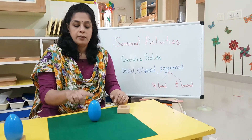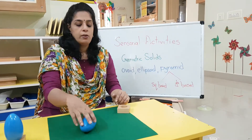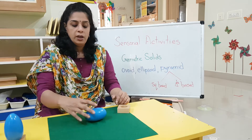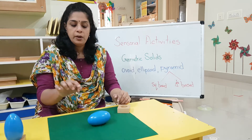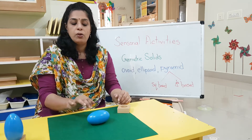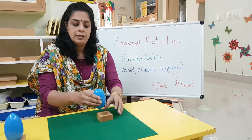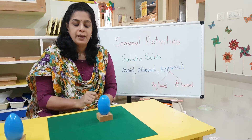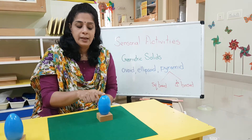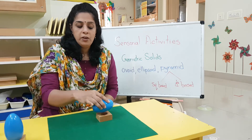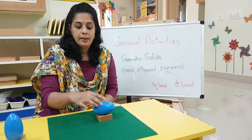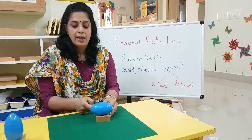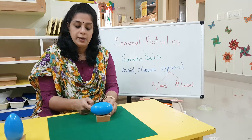Let's try if it can sit — no. If I put it like this it's going to roll. Best is to keep it on a base. Ellipsoid. Will you repeat with me? Ellipsoid. Ellipsoid.